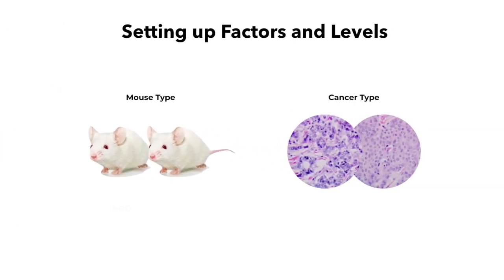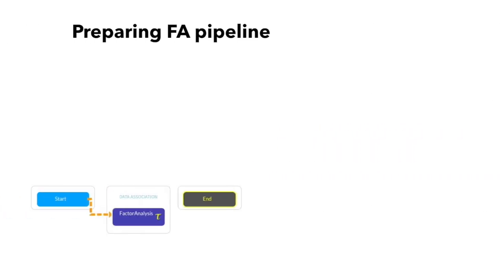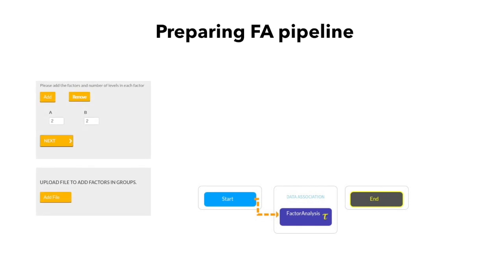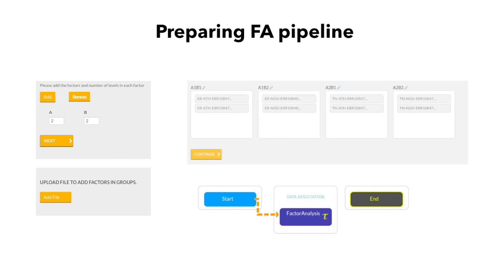Let's take a smaller subset: NOD and Athymic for mouse type, and ER and TN for cancer type. Once our data is labeled, let's prepare the pipeline — it is very simple. Just connect factor analysis to start, then prepare the groups according to levels. After uploading the files, drag the appropriate name of your sample into the right group by level and factor combination. ER positive is factor A, level 1. Athymic nude is factor B, level 1. NOD mouse is factor B, level 2. So the ER NOD sample we will place in that group, and so on.